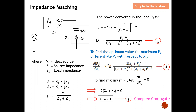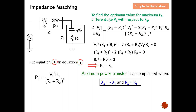We still need to show why R1 must equal R2. Substituting equation 3 (X2 = -X1) back into equation 1, all the reactance terms disappear, leaving P2 equal to V1 squared times R2 divided by (R1 plus R2) squared. To find the optimum R2 for maximum P2, we differentiate P2 with respect to R2 and set it equal to zero.